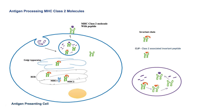In contrast to HLA class 1 molecules, HLA class 2 molecules present peptides derived from extracellular sources. Antigen presenting cells first ingest pathogens and other particles from the extracellular environment. Proteins derived from these sources are then broken down into smaller peptides and presented on HLA class 2 molecules.